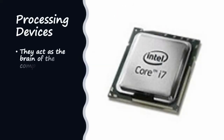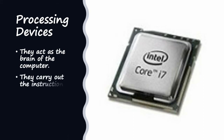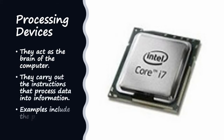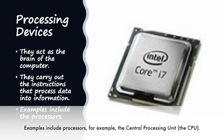Processing devices act as the brain of the computer. They carry out the instructions that process data into information. Examples of processing devices are processors, for example the central processing unit, the CPU.